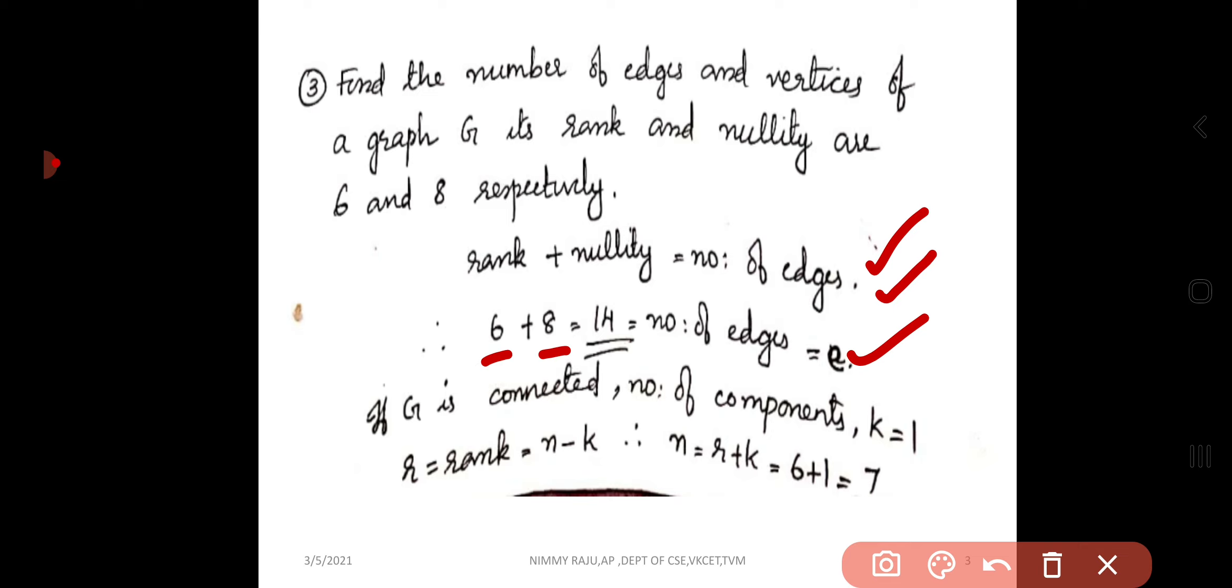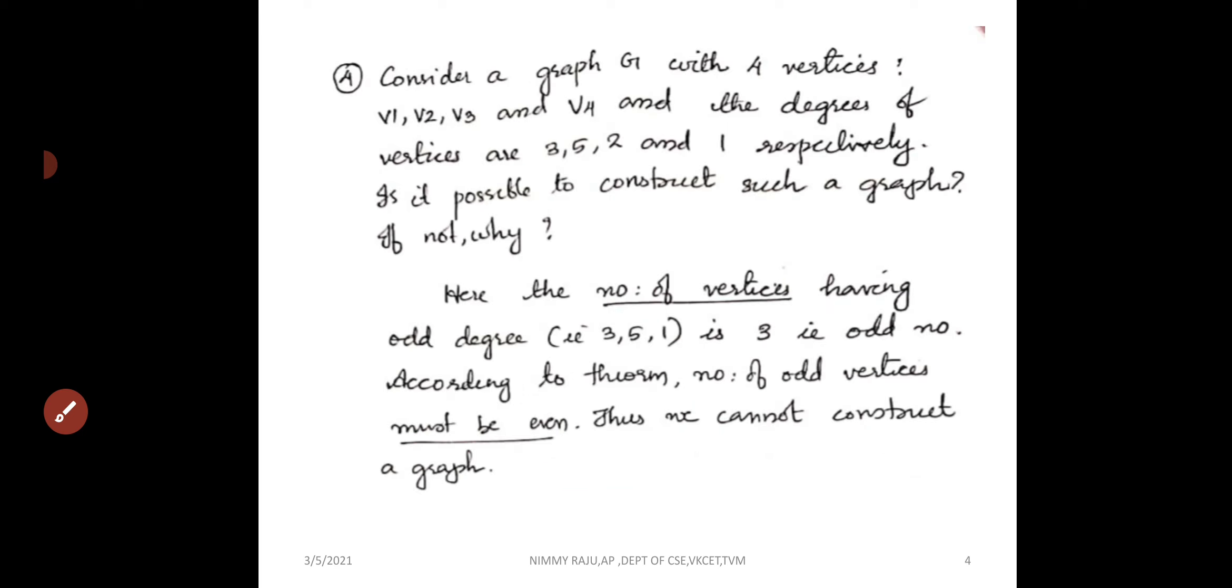So we have rank, that is rank value is equal to 6. R equal to n minus K. So from that, n equal to R plus K, that is 6 plus 1 equal to 7. Then, next question.